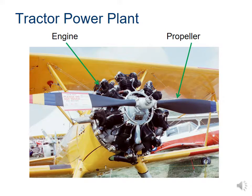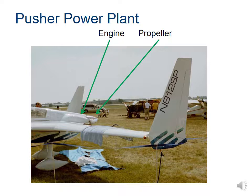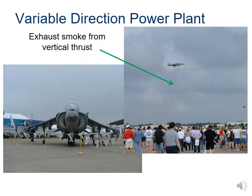A closer view of the tractor power plant shows the engines and the propeller — don't touch, especially not when it's moving. The pusher power plant has the engine and propeller in the back rather than the front — that mid-wing configuration is great for aerobatics. The Harrier jet is an example of a variable-direction power plant that can rotate its thrust — either downward facing for vertical takeoff and landing, or aft facing to propel it forward.